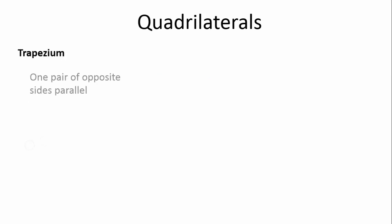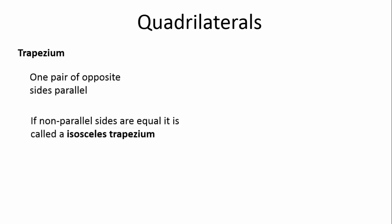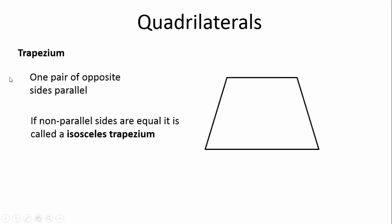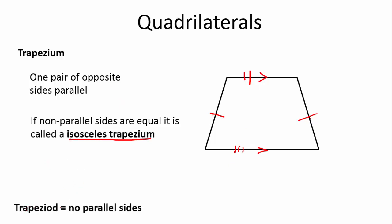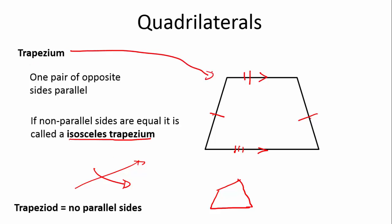Let's now look at our trapezium. One pair of opposite sides are parallel. If the non-parallel sides are equal, it is called an isosceles trapezium. So one pair of opposite sides is parallel — that side is parallel to that side. If the non-parallel sides are equal in length, then it is an isosceles trapezium. Depending on your country: a trapezium has one pair of parallel sides, while a trapezoid has no parallel sides — though in the US, the definitions are reversed.